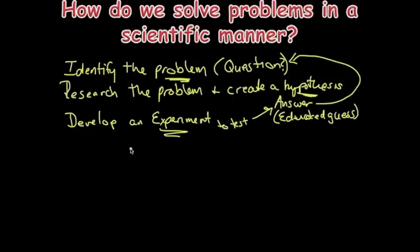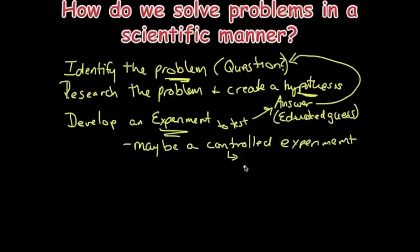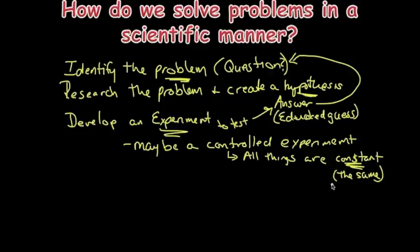So an experiment may be a controlled experiment. And we'll get into that in another lecture more in detail. But just something to think about is a controlled experiment is where all things are constant. And you're going to see that word throughout this year, and constant means the same. So all things in a controlled experiment are constant, the same, except one.